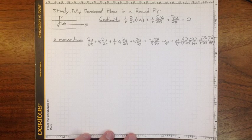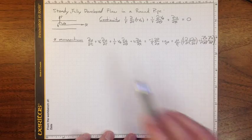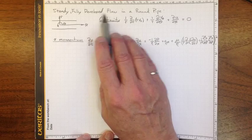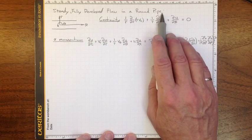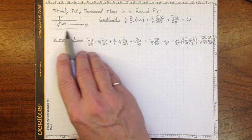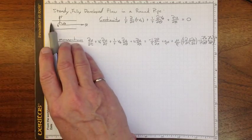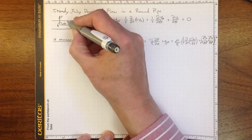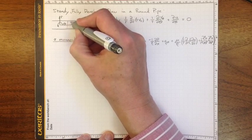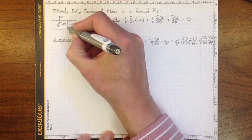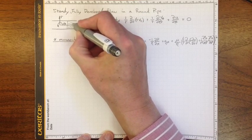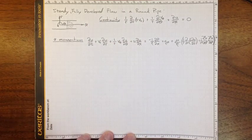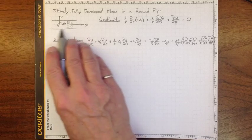If we're interested in flow in pipes, the first step would probably be to tackle a steady flow, fully developed in a simple round pipe. If this is our pipe and we've got a long distance upstream before we get to this segment of pipe, then we'll expect to have a fully developed velocity profile based on our observations of flow behavior in pipes and insight from flow between parallel plates.